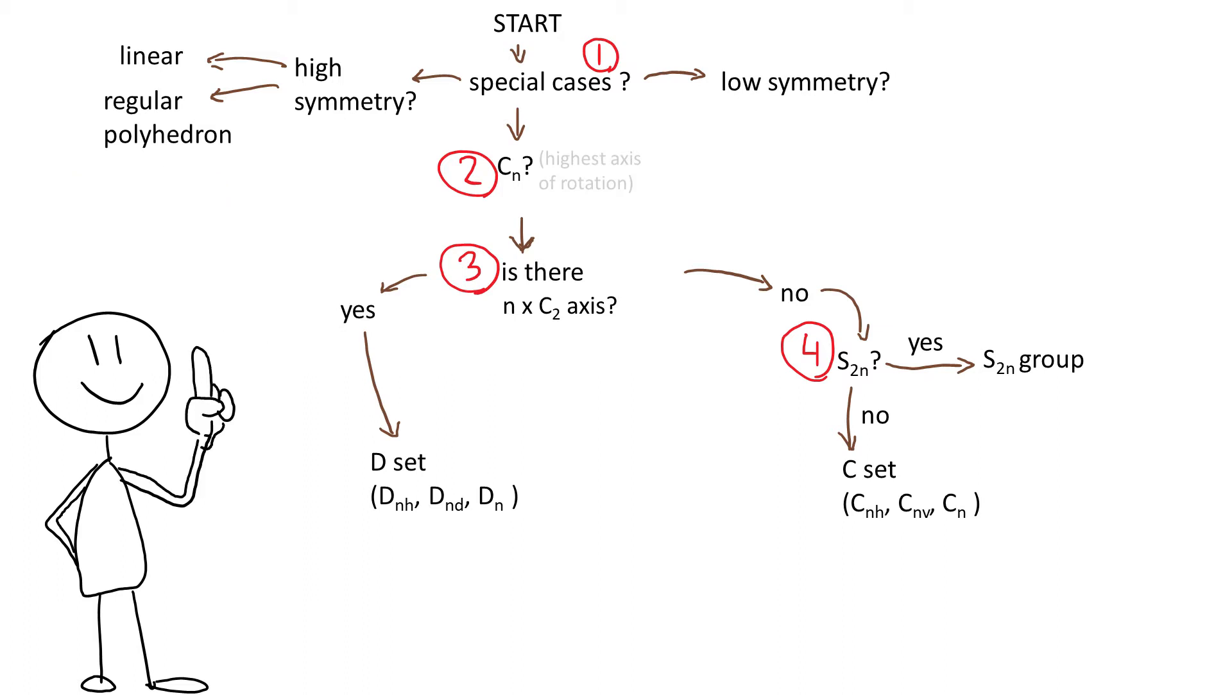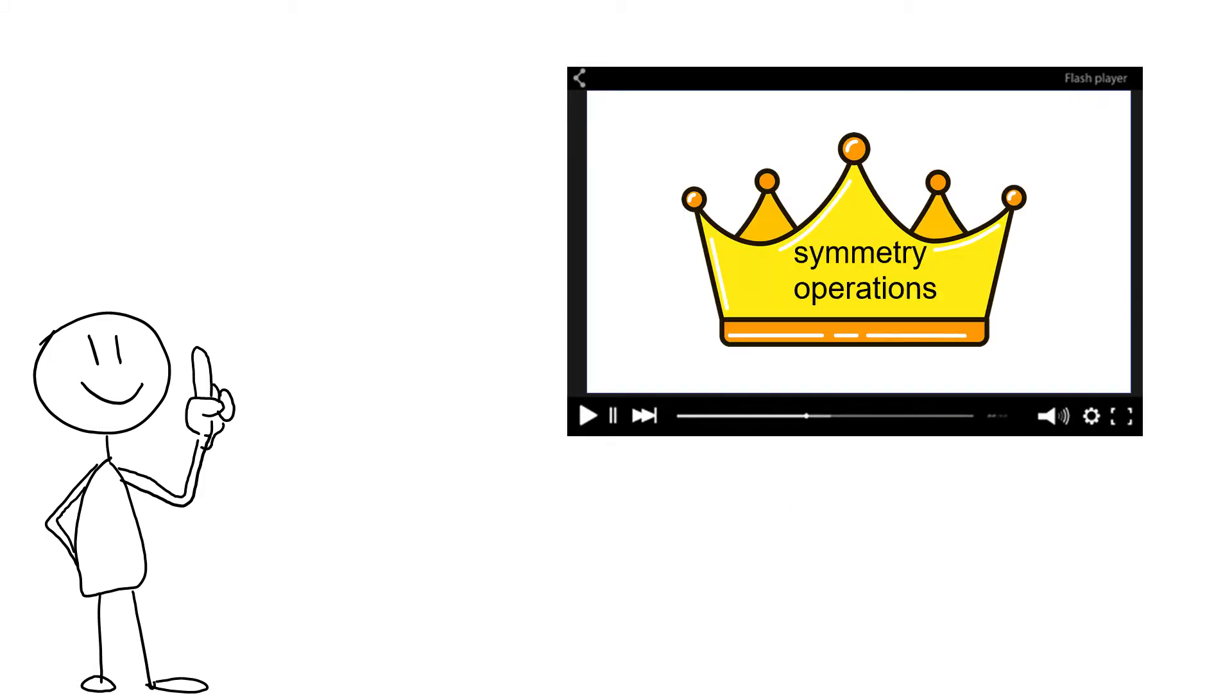Before we jump in I would like to highlight one important thing. In the last video we said that there are the symmetry operations that are the most important. We said that when a molecule has D4H symmetry it has these symmetry operations. The whole process of predicting the number of IR stretches, which is the reason why you're learning group theory, will be revolving around symmetry operations.